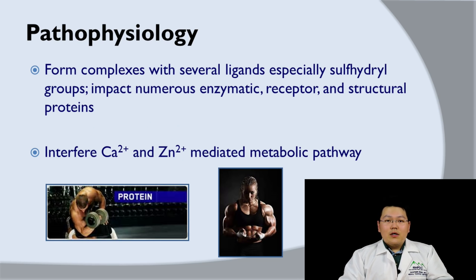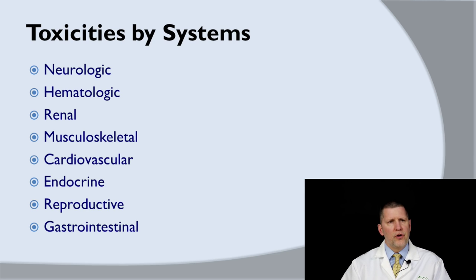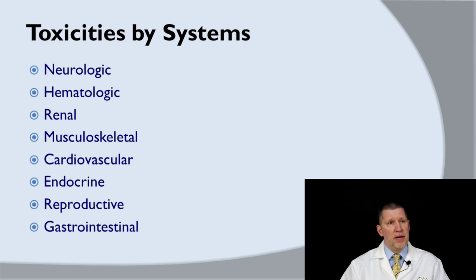For pathophysiology, lead forms complexes with several ligands, especially the sulfhydryl group, which is found in proteins. The protein acts as enzyme, receptor, and structural. Lead also interferes with calcium and zinc-mediated metabolic pathways. It's important to remember that lead, unlike say copper or iron, does not have any healthy role in the body. Any amount of lead can produce toxicity, and this toxicity affects many organ systems in the body. The primary toxicity we see is neurologic, but there are also important injuries that can occur to the hematologic system, the kidneys, and other systems.